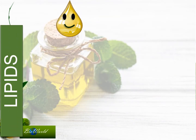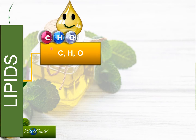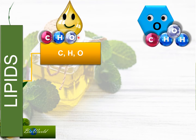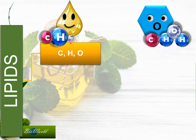To start our discussion, let's look at the elements that make up lipids. Lipids are made of carbon, hydrogen and oxygen. This is similar to the elements that make up carbohydrates, but there is a difference. In carbohydrates, the ratio between hydrogen and oxygen is 2 to 1. However, in lipids, the amount of hydrogen is very much bigger than the amount of oxygen.